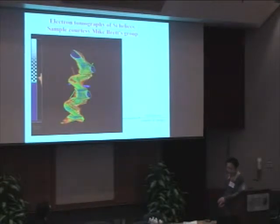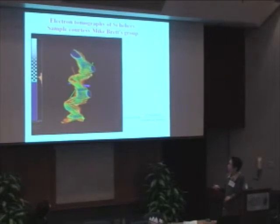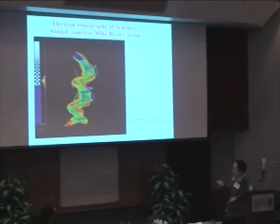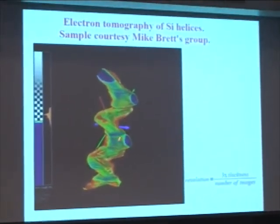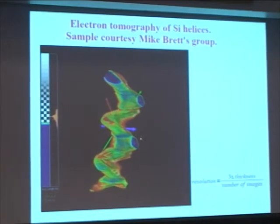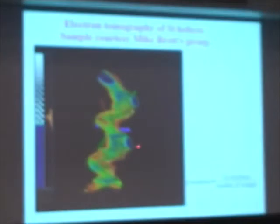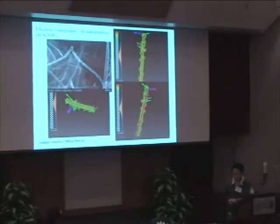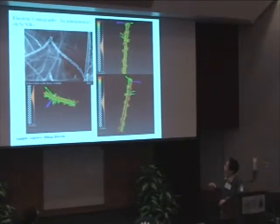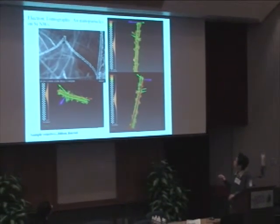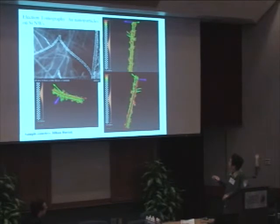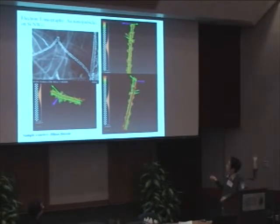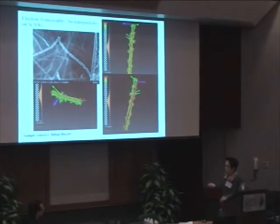Here is a reconstructed result of a single silicon helix, also from the McBride group. After reconstruction, you can manipulate the data to get true 3D information. Here is another example of gold particles on silicon nanowires — from a different angle of the reconstructed data, you can really see that the gold particle is on the outside of the silicon nanowire. That is what our collaborators wanted to verify.